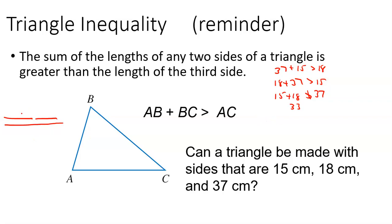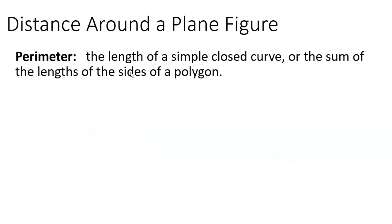So those two sides will be kind of like this — you have an 18 over here, 15 over here, and a 37 down the bottom, and they won't close. You could run this through in class with pipe cleaners or pieces of spaghetti cut to different lengths to see if people can figure out what makes a triangle and what doesn't. That's what we call the triangle inequality.